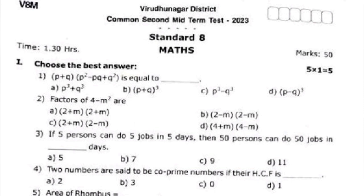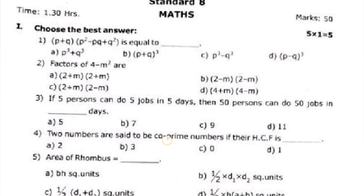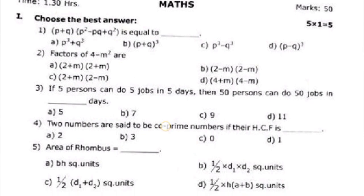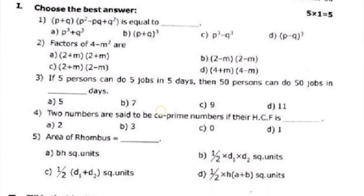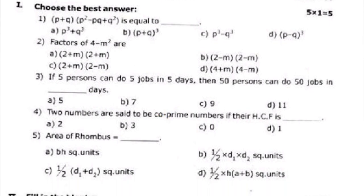If you look at the 8th standard marks question paper, the total marks are 50. We choose the best answer for 50 marks. If you choose the best answer section for 5 marks, you will need to be very careful.